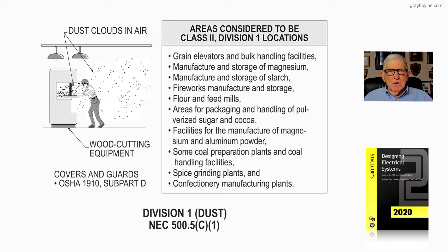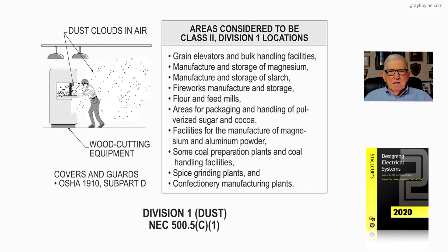Now let's look at Figure 21-3. It deals with Class 2 Division 1 locations, and it gives a laundry list in the boxed-in information of what is considered a Class 2 Division 1 type location. You can see grain elevators and bulk handling facilities as bullet one, and if you drop down to the bottom bullet, you have manufacturing plants and things of that nature — the different locations classified as Class 2 Division 1.